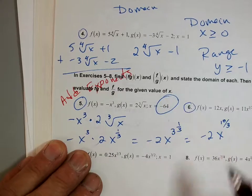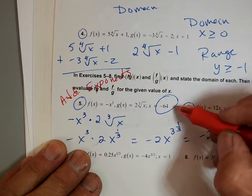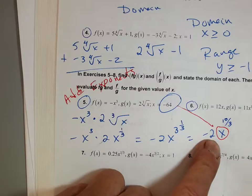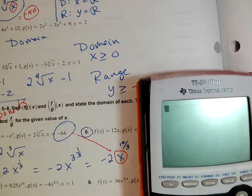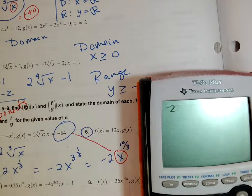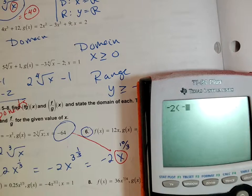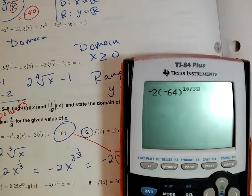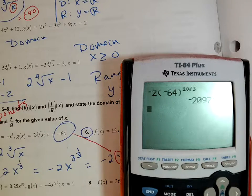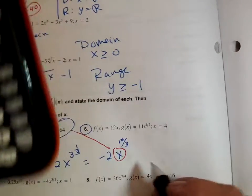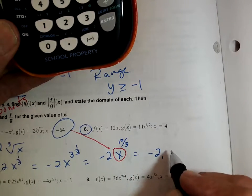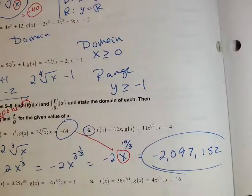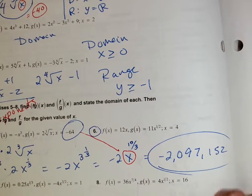Now if I want to evaluate at negative 64, I'll use my calculator. I go negative 2 times parentheses negative 64 to the power of 10/3. I enter it and get a big number — negative 2,097,152. That is the answer.